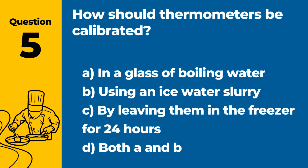Question 5. How should thermometers be calibrated? Answer: D. Both A and B. Thermometers can be calibrated using the ice water slurry method for cold calibration or boiling water for hot calibration to ensure accuracy.